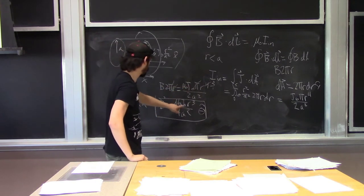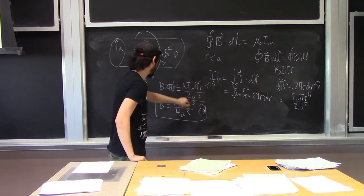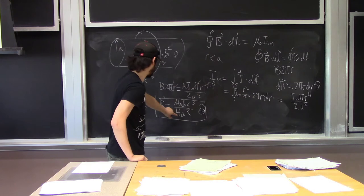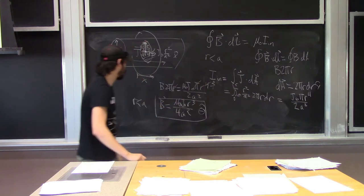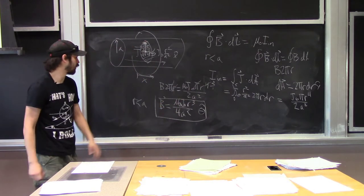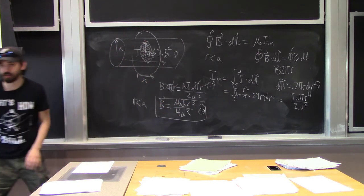Let me check the algebra: μ₀J₀r³, the two comes over, and the factor of π is canceled. Yes, this looks good.